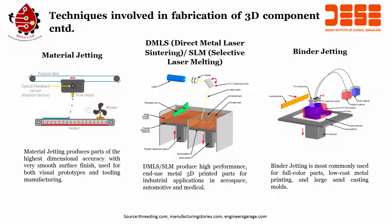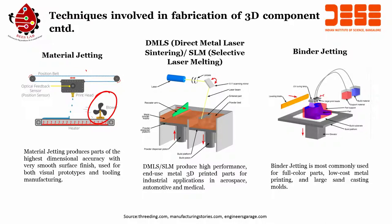Let us see a few more techniques. We have material jetting, DMLS, and binder jetting. The material jetting process produces parts of the highest dimensional accuracy with a very smooth surface finish, used for both visual prototypes and tool manufacturing. It uses a positional belt, an optical feedback position sensor, a print head, and a blower. The printer head moves in X and Y directions, and there is a heater on the bed which starts printing the material by jetting it over the heated bed.